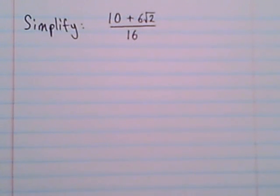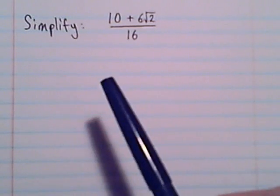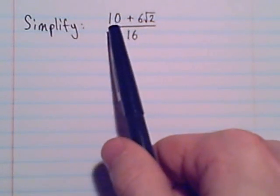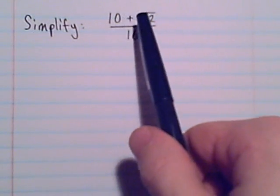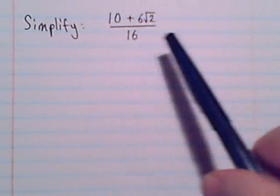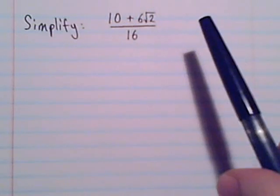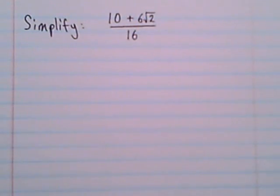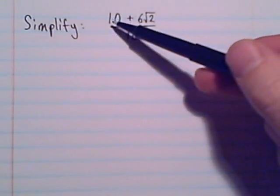Here's our next example. I want to point out something first about our numerator: we have two terms, 10 and then a positive 6√2. We haven't talked about different radical terms yet, but what I can tell you for right now is that these are not like terms. We can't do this addition.